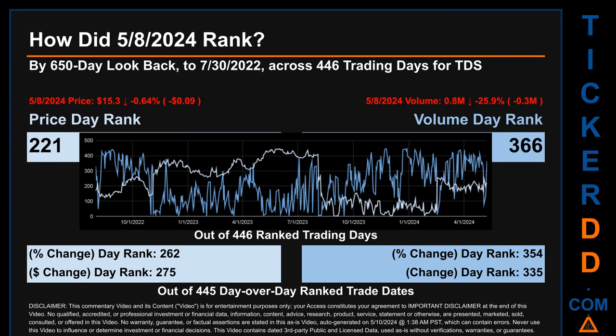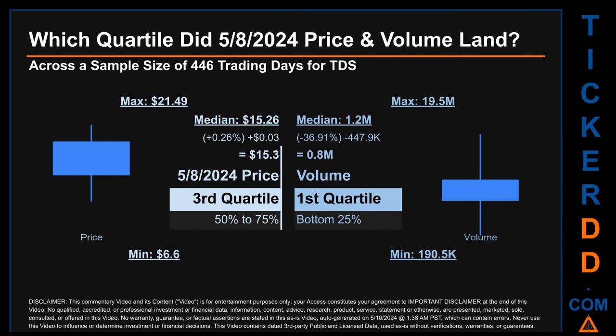Hello, my name is Magnus. How did May 8th, 2024 rank for TDS across a 650 calendar-day lookback to July 30th, 2022, covering 446 trading days? The May 8th, 2024 price ranked 221st while its volume ranked 366th out of 446, with rank 1 being the highest and 446 the lowest. The price's day-over-day percentage change of minus 0.64% had a day rank of 262, while its dollar difference of minus 9 cents had a rank of 275. Volume percentage change and dollar difference were ranked 354 and 335 respectively.